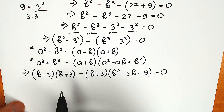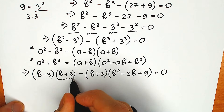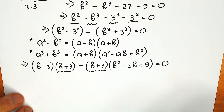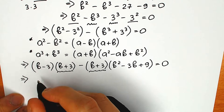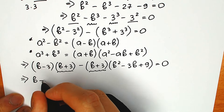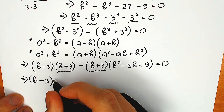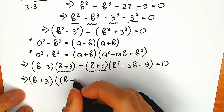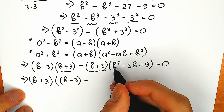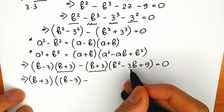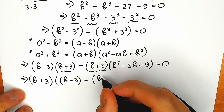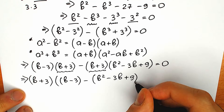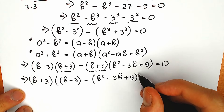This is extremely helpful because right now we have (b plus 3) in both terms, so we can factor out (b plus 3) as a common expression. So we have (b plus 3) times, and in the other parenthesis from the first part we have (b minus 3), minus the second expression (b squared minus 3b plus 9), equal to 0.